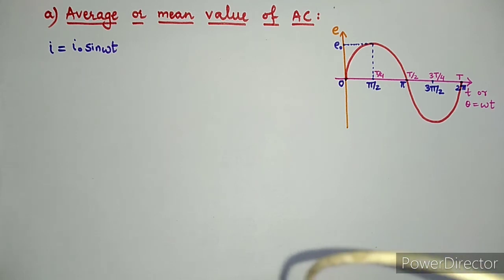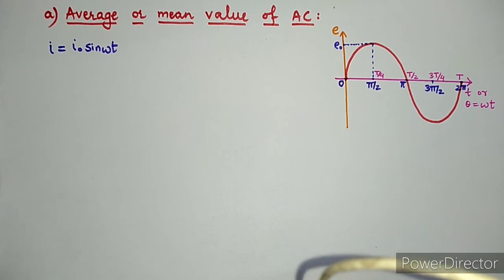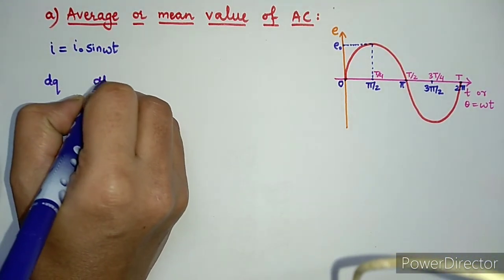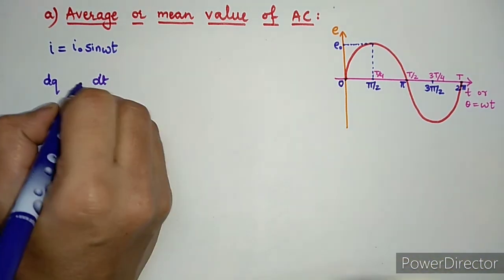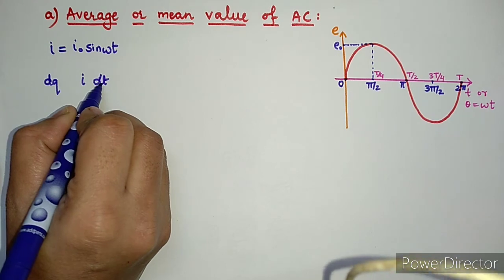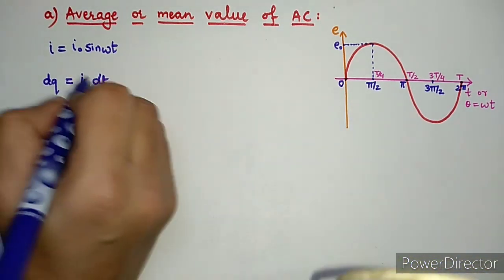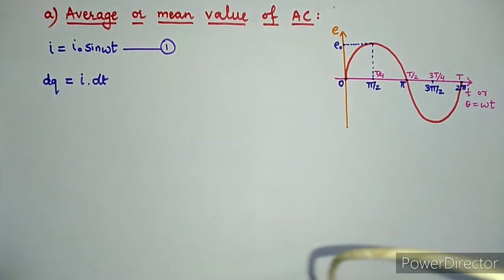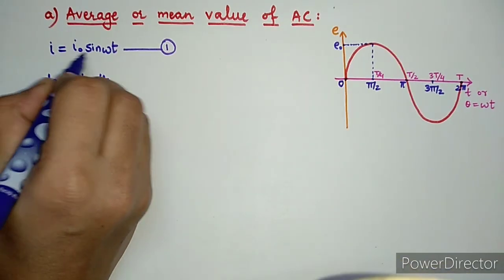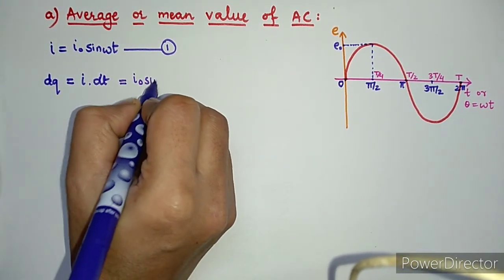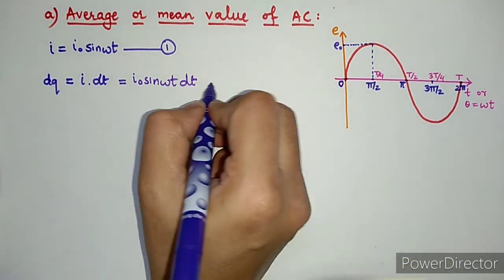To determine the average value, consider a small charge dq flowing for a small interval of time dt, so that dq = I·dt. Since I = I₀ sin(ωt) (equation 1), we can write dq = I₀ sin(ωt) dt (equation 2).